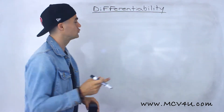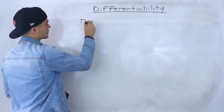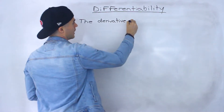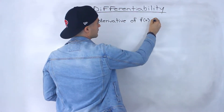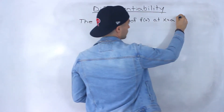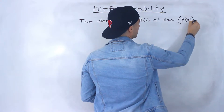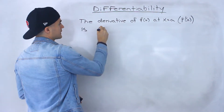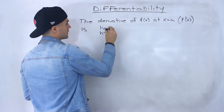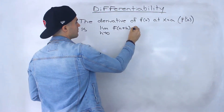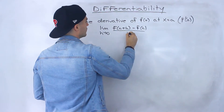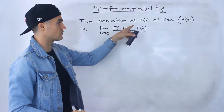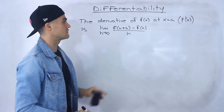To start this video off, I want to do a quick review of what we've covered so far. The derivative of f of x at an x value of a — a short form for this is f prime of a. The derivative of f of x at an x value of a is the value of this limit: the limit as h approaches 0 of f of a plus h minus f of a, all over h — the difference quotient, the definition of a derivative.